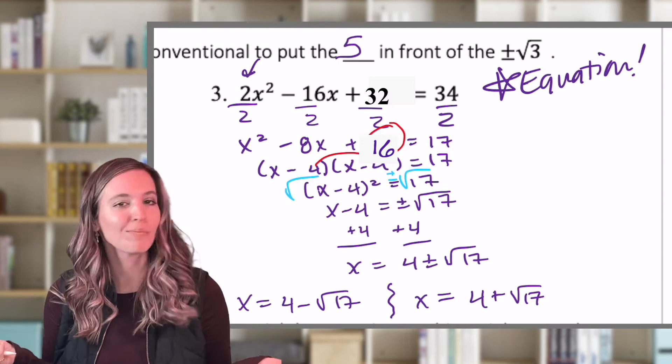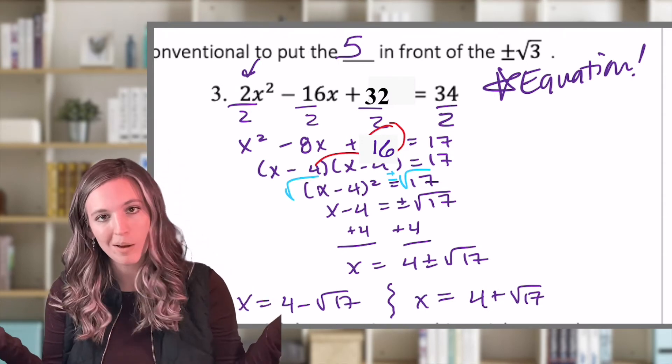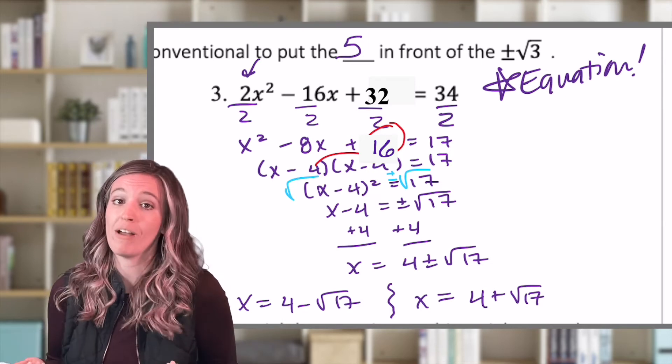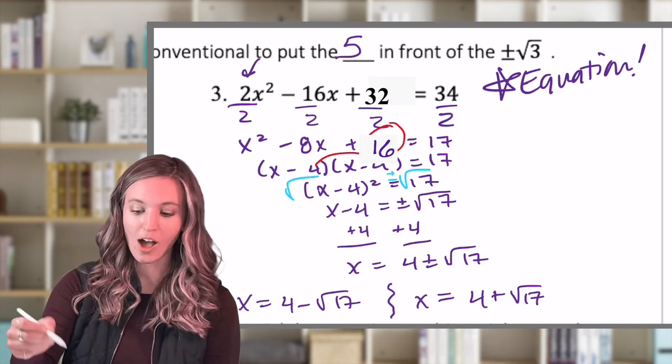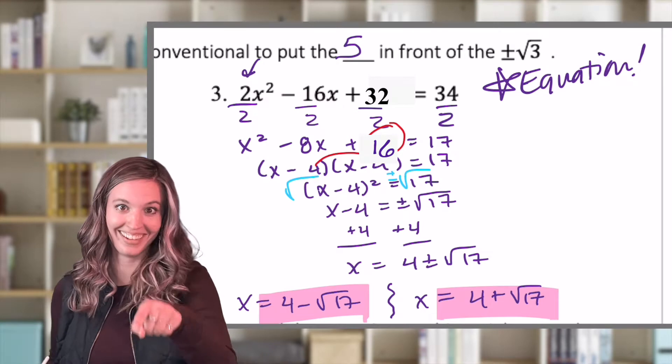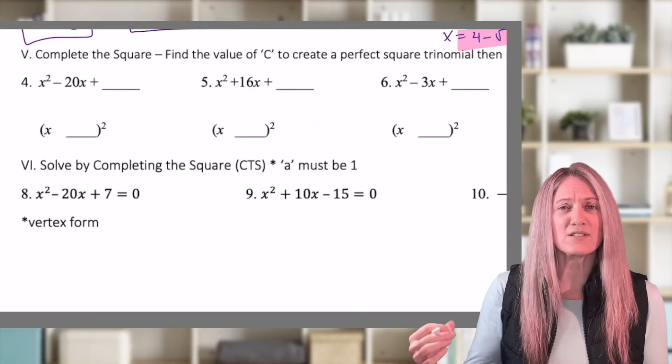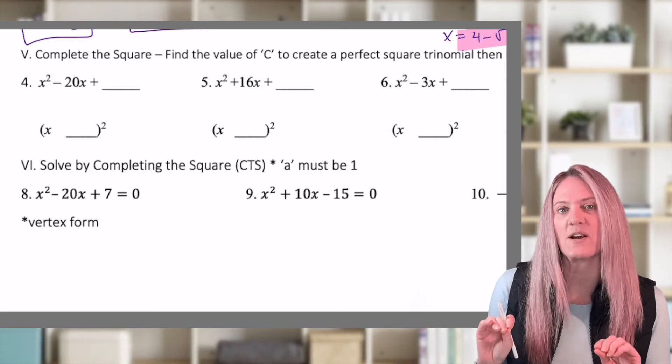Check this out. I ended up getting x minus four equals positive or negative square root of 17. Well, that's not a perfect square, and I can't simplify it. So I just added the four and wrote my final answer as four plus or minus square root of 17. As long as we understand that that's two solutions. So what happens if we don't have a perfect square trinomial to start with? Well, we make it happen. So let's just practice perfect square trinomials.